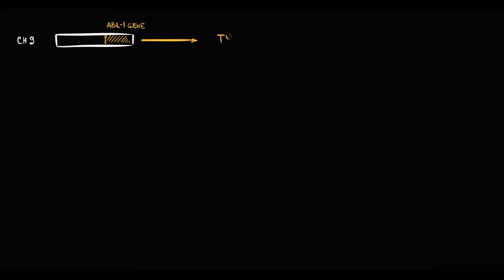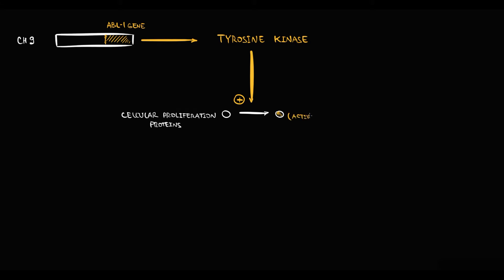So initially we have a stem cell. In this stem cell, we have chromosome 9. We have to know that on chromosome 9 is located the ABL1 gene, which encodes a specific enzyme called tyrosine kinase. The function of tyrosine kinase is to activate proteins that are responsible for cellular proliferation. Activation of proteins occurs by phosphorylation — in order to activate proteins, tyrosine kinase uses an ATP molecule.